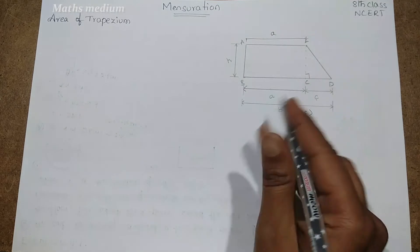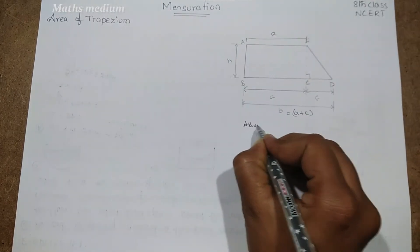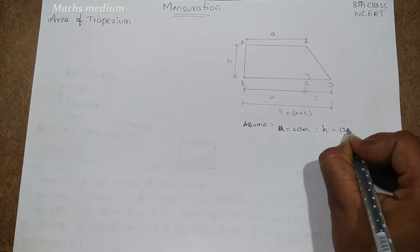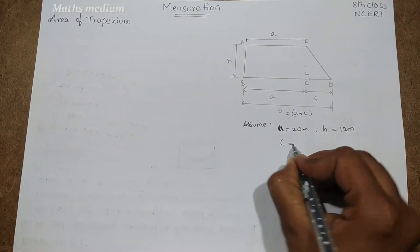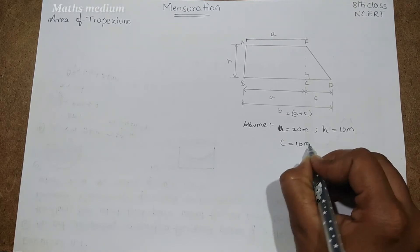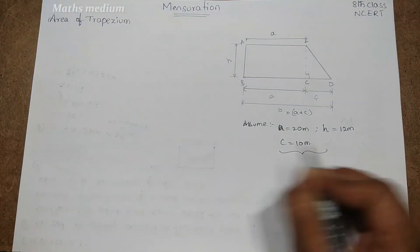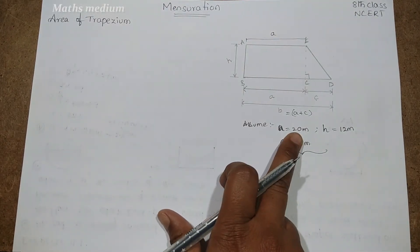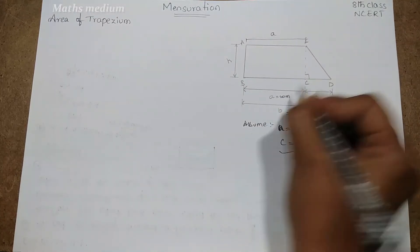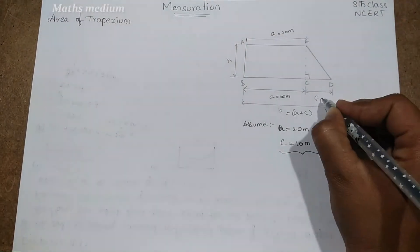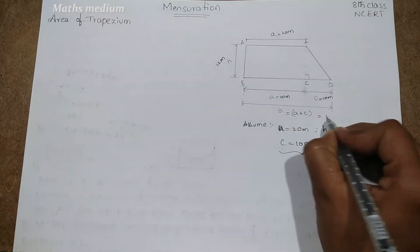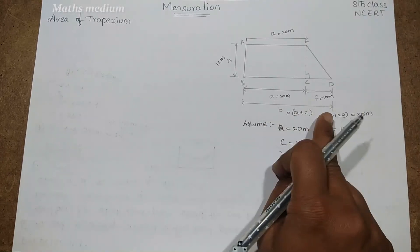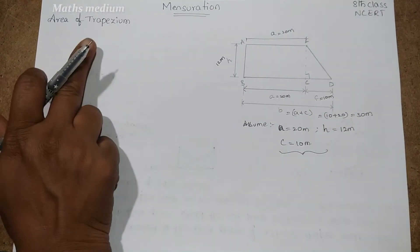So assume a = 20 meters, h = 12 meters, and c = 10 meters. Based on these values we can find the area of the trapezium. Here, a = 20 meters. All our values are written here with a pen, so let's start with the area of trapezium formula.